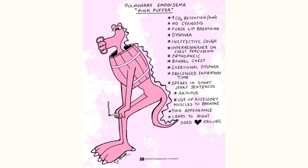Emphysema patients speak in short, jerky sentences because they run out of air. They may appear anxious, use accessory muscles, appear thin, and this also leads to right-sided heart failure, or cor pulmonale. Unique to pink puffers or pulmonary emphysema: increased CO2 retention, absence of cyanosis, ineffective coughing, and hyperresonance on chest percussion. These features delineate emphysema from chronic bronchitis.